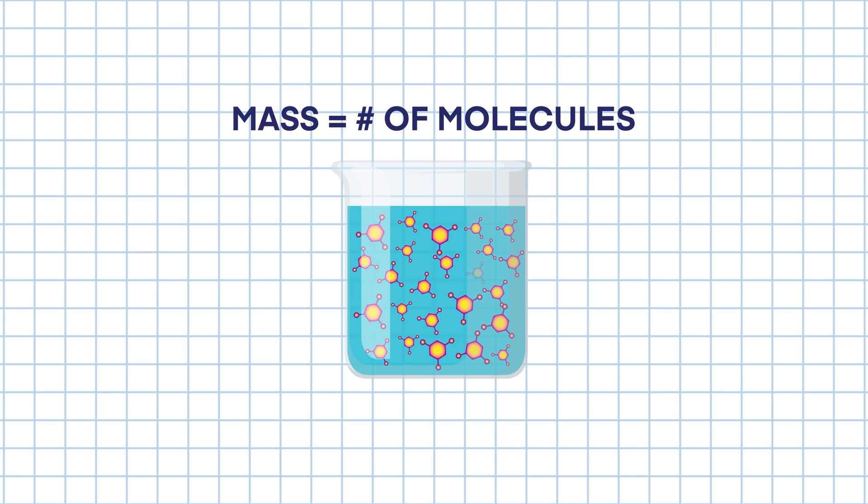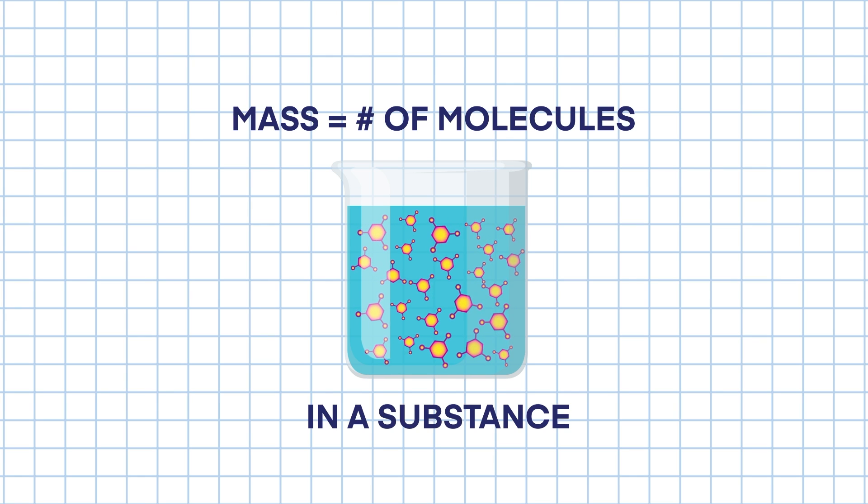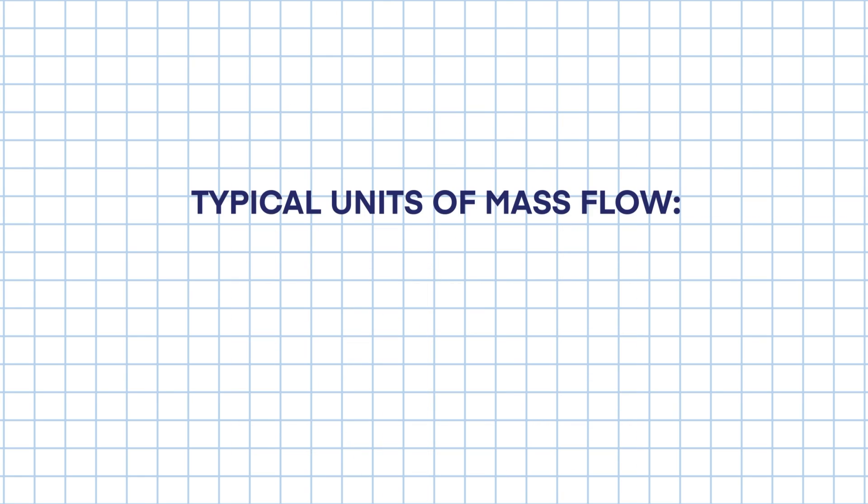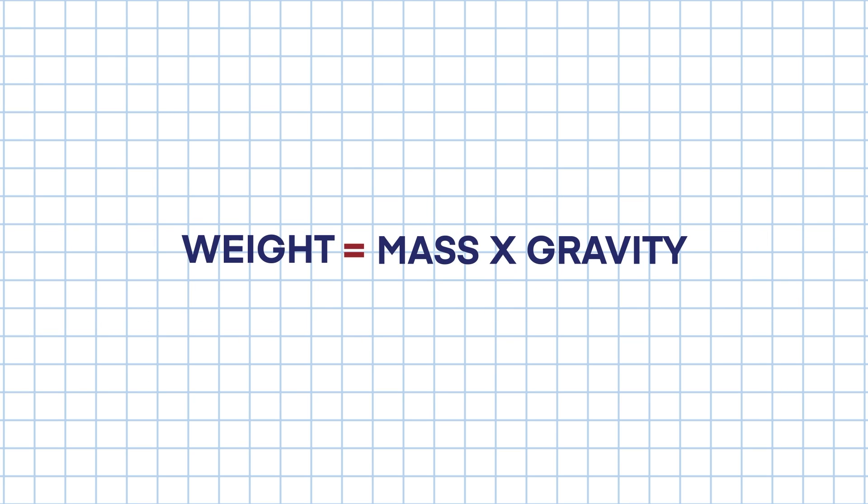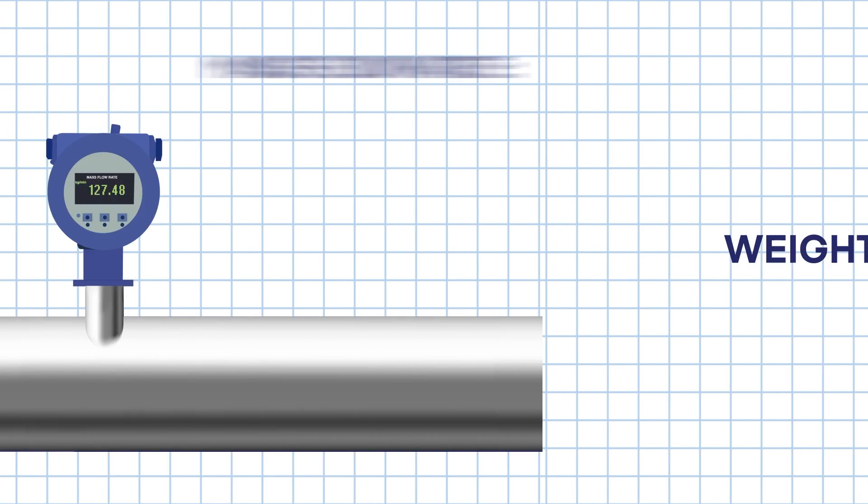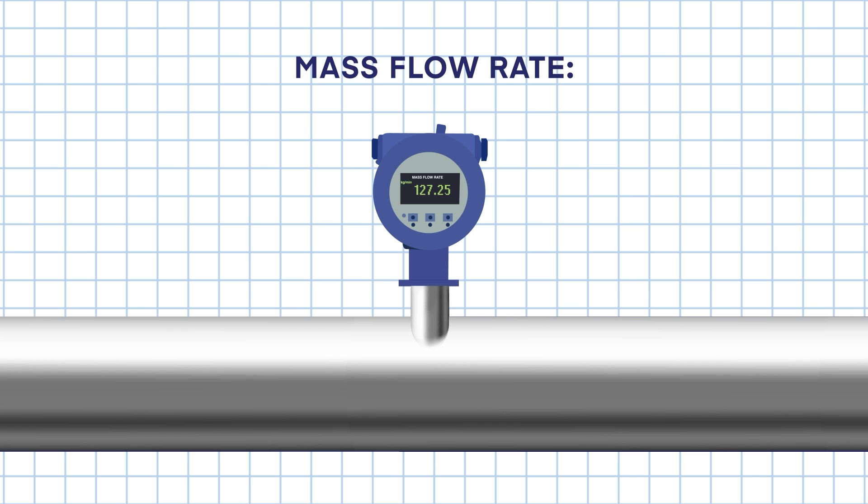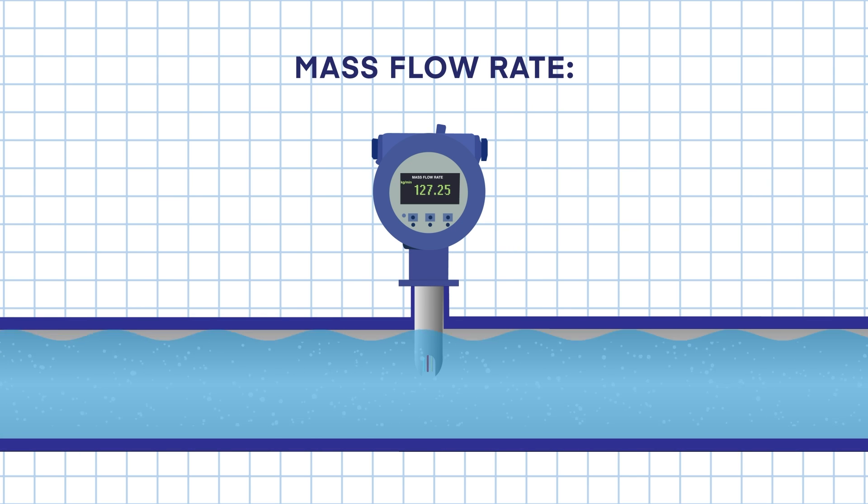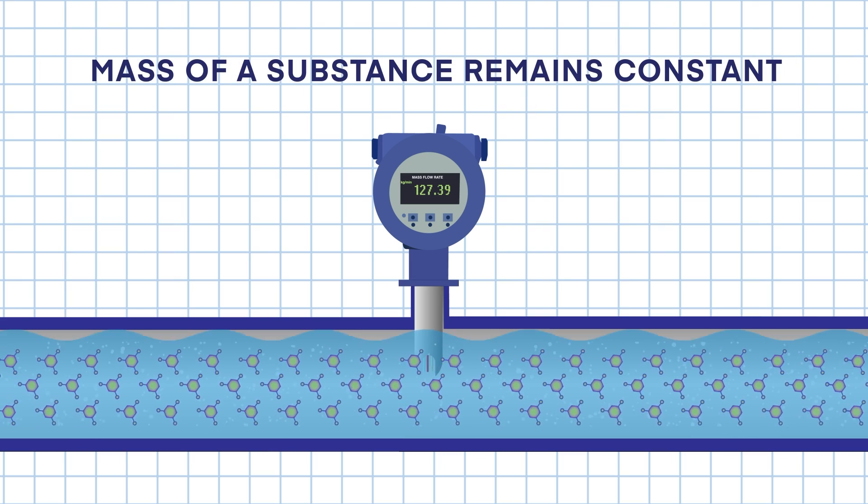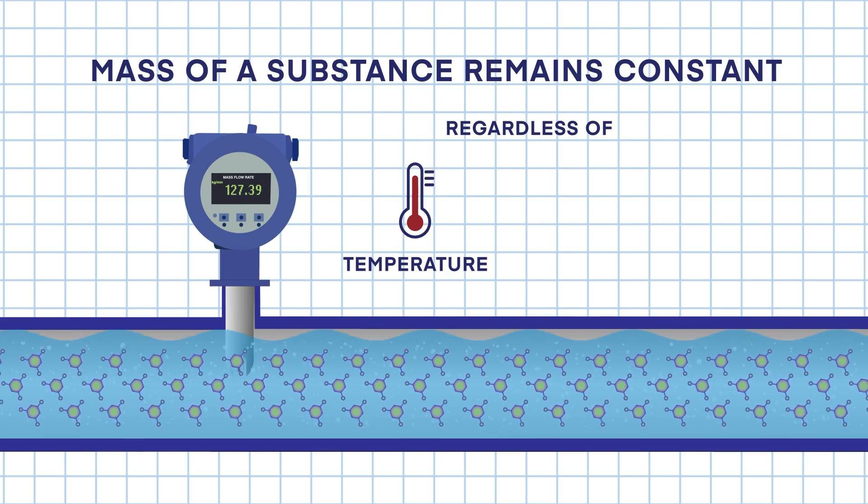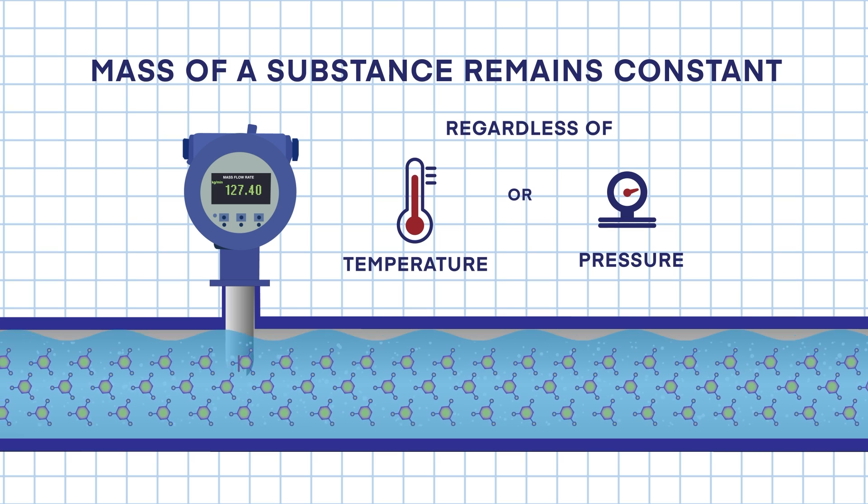Mass refers to the number of molecules found in a substance. And even though typical units of mass flow are kilograms per hour or pounds per minute, weight and mass are not the same thing, since weight is merely the measure of how the force of gravity acts upon an object's mass. Mass flow rate is the amount of mass moving through the flow meter per unit of time, with mass being represented by the number of molecules in that substance. The mass of a substance remains constant, regardless of the temperature or the amount of pressure the substance is under.